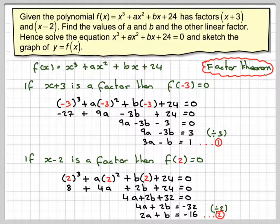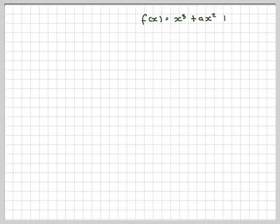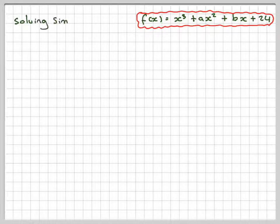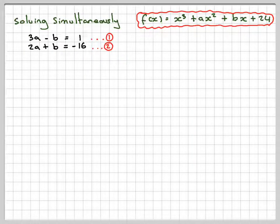So we've got our two equations. We can now solve them simultaneously. Solving simultaneously, we've got 3a - b = 1 and 2a + b = -16. By elimination, by adding...